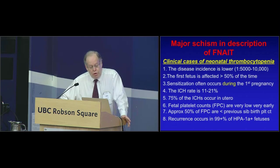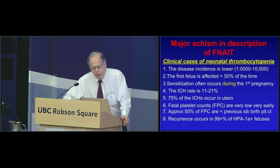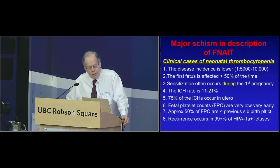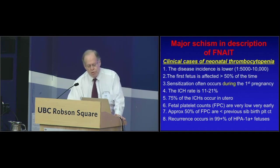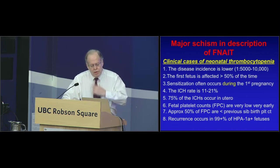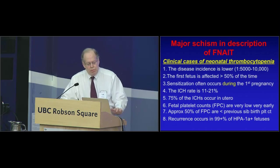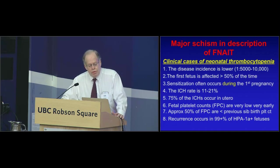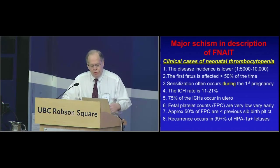On the other hand, looking at it from the clinical disease perspective: the incidence is lower — I think one in 5,000 to 10,000 is fair. We just submitted a manuscript showing the first fetus is affected in severe cases more than 50% of the time, and thus sensitization occurs during the first pregnancy. The ICH rate is 11 to 21%. Most ICHs occur in utero. Fetal platelet counts in subsequent affected pregnancies are very low, very early in gestation. Almost 50% of fetal platelet counts obtained at 20 to 24 weeks in previous studies prior to any treatment are lower than the previous sibling's birth platelet count. Recurrence is found in essentially all subsequent HPA1A-positive fetuses of the mother.